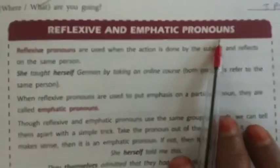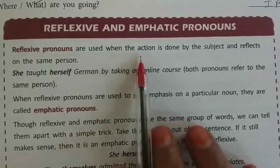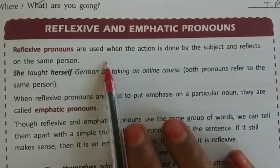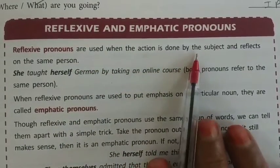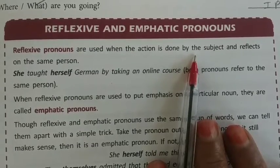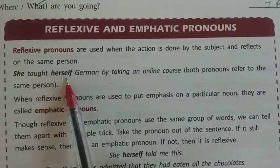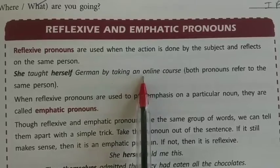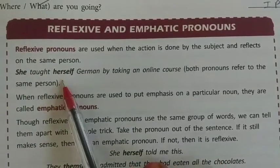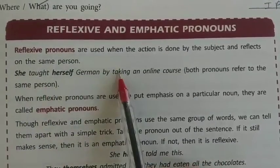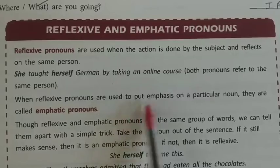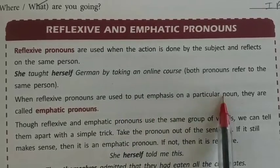Reflexive and emphatic pronouns. Reflexive pronouns are used when the action is done by the subject and reflects back on the same person. Reflexive pronouns के अंदर जो action subject के द्वारा done किया जाता है, उसका effect उसी person पर पड़ता है। For example: 'She taught herself German by taking an online course.' यहाँ वह सीख रही है जर्मन, और उसका effect भी उसी पर पड़ रहा है।